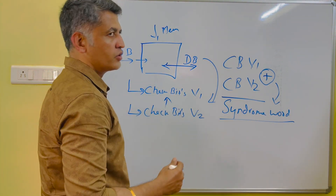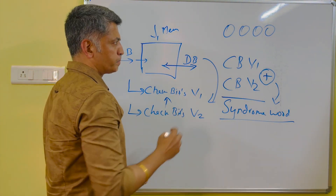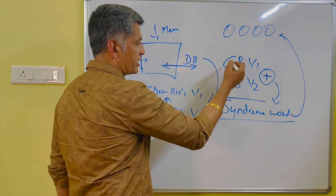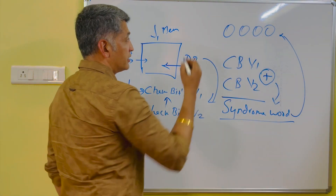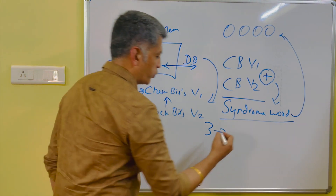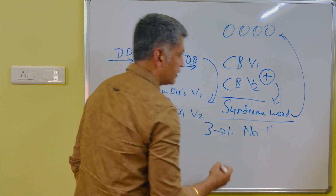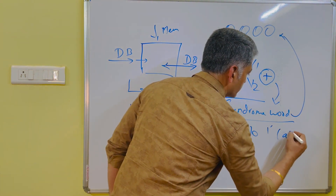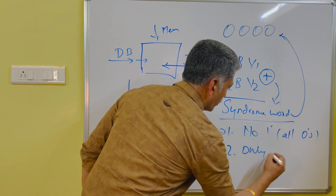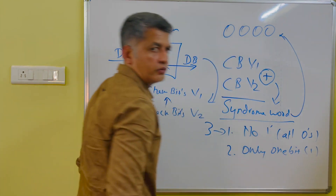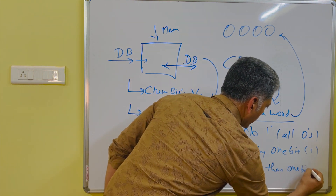For example, considering that 4 bits are there in the check bit, the syndrome word will also have 4 bits — because check bit version 1 has 4 bits and check bit version 2 has 4 bits, so the result will be 4 bits. Now there are 3 options: first, there is no 1 in your syndrome word — all are 0s. Second, only 1 bit will be 1. And third, more than 1 bit will be 1.